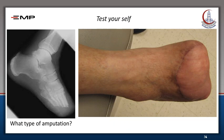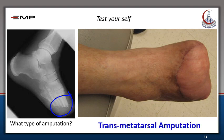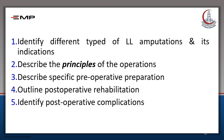You can test yourself now — what is the type of this amputation? Yes, this is a transmetatarsal amputation. I hope that by now you are able to identify different types of lower limb amputations and their indications, describe the principles of the amputation operation, describe specific preoperative preparation, outline postoperative rehabilitation, and identify postoperative complications. Thank you.